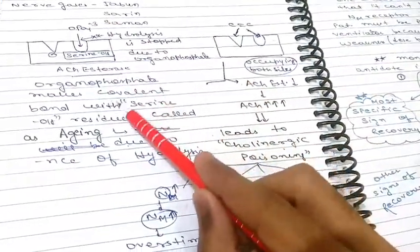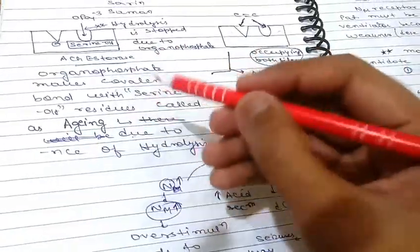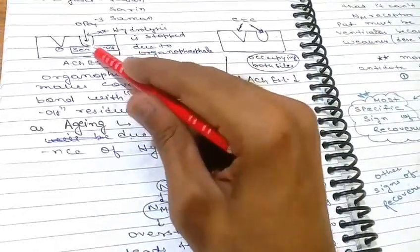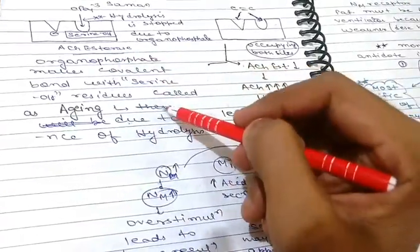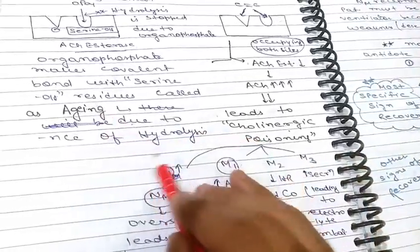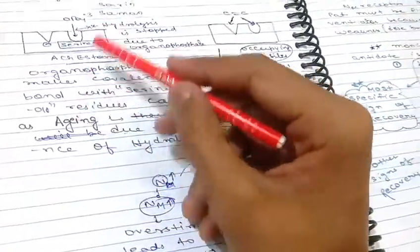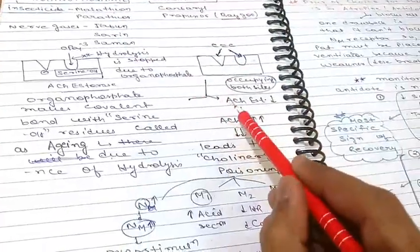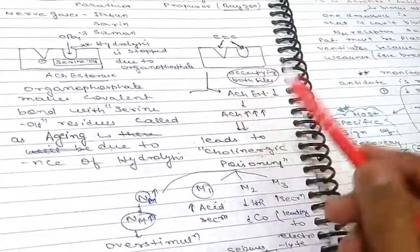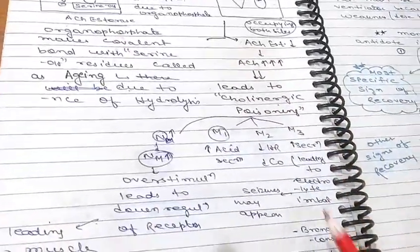Organophosphates first form a loose interaction with the esteratic site and then form a covalent bond — this is known as aging. Aging occurs due to absence of hydrolysis. In the case of carbamates, carbamates occupy both sites. By either mechanism, acetylcholinesterase activity is inhibited, increasing acetylcholine levels, leading to cholinergic poisoning. This means increased acetylcholine at receptors — stimulating M1 causing increased secretion, M2 causing decreased heart rate and cardiac output, M3 causing increased secretion leading to electrolyte imbalance.